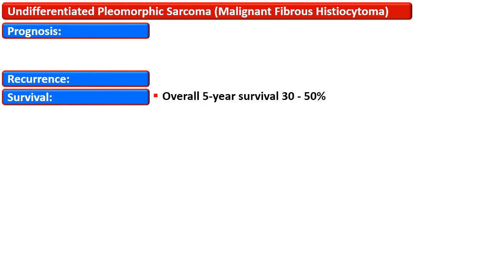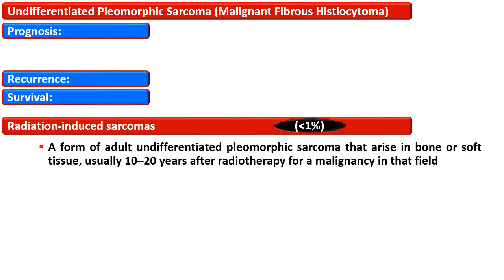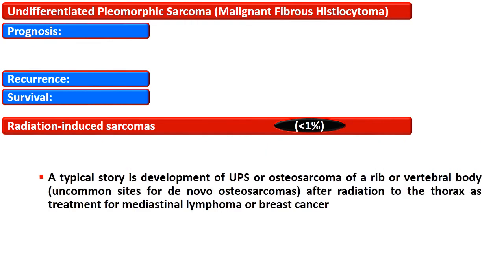Radiation-induced sarcoma may occur in less than 1% of people who receive radiation for some tumor. It is a form of adult undifferentiated pleomorphic sarcoma that arises in bone or soft tissue, usually 10 to 20 years after radiotherapy for a malignancy in that field. An example is the development of osteosarcoma of a rib or vertebral body — not a common site — associated with a history of radiation to the thorax for treatment of mediastinal lymphoma or breast cancer.